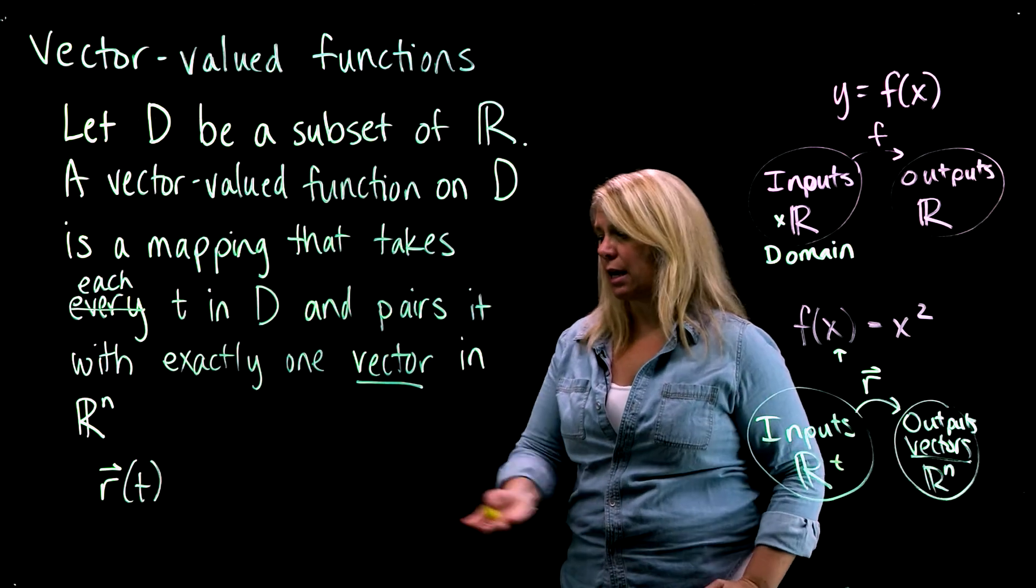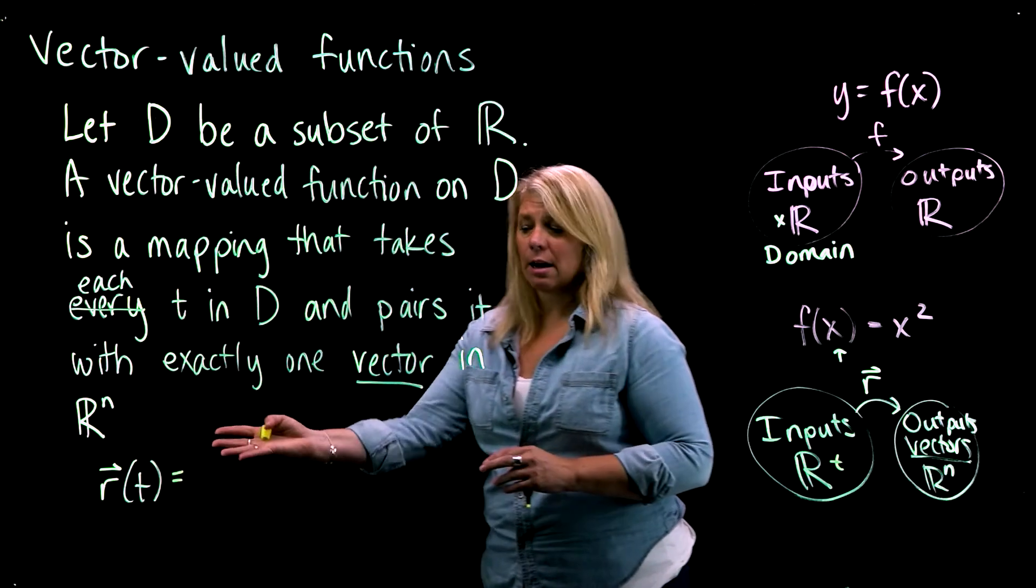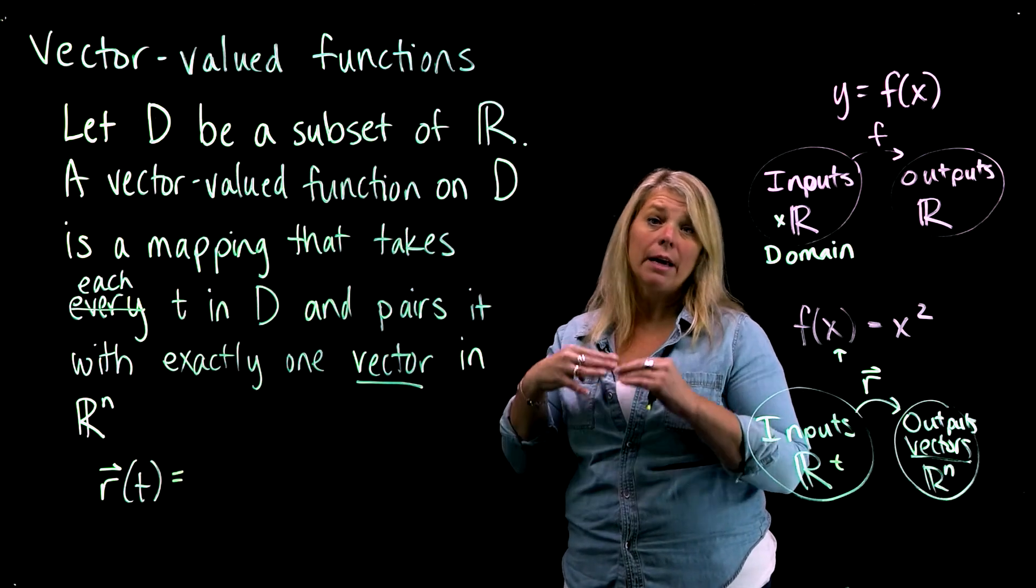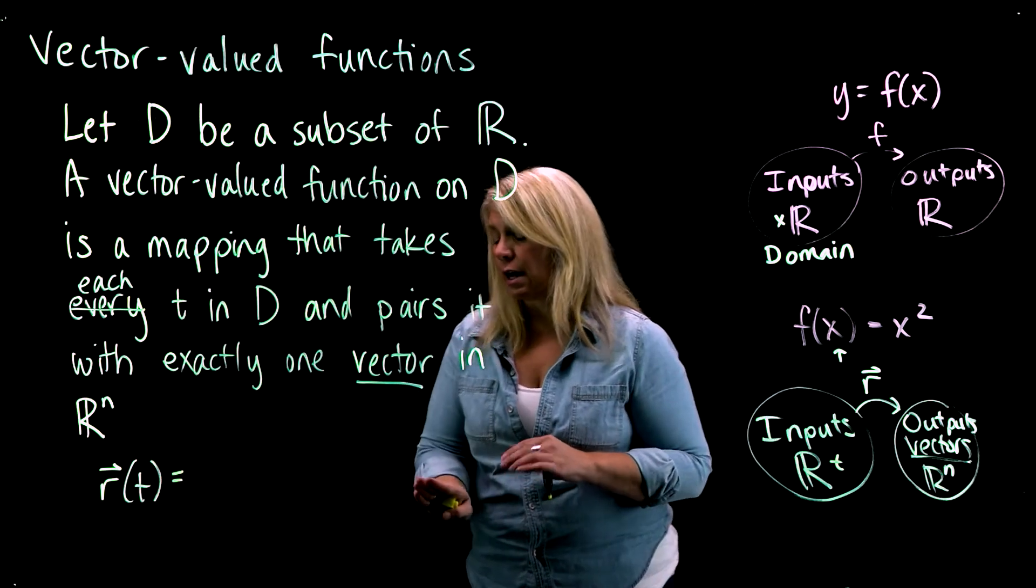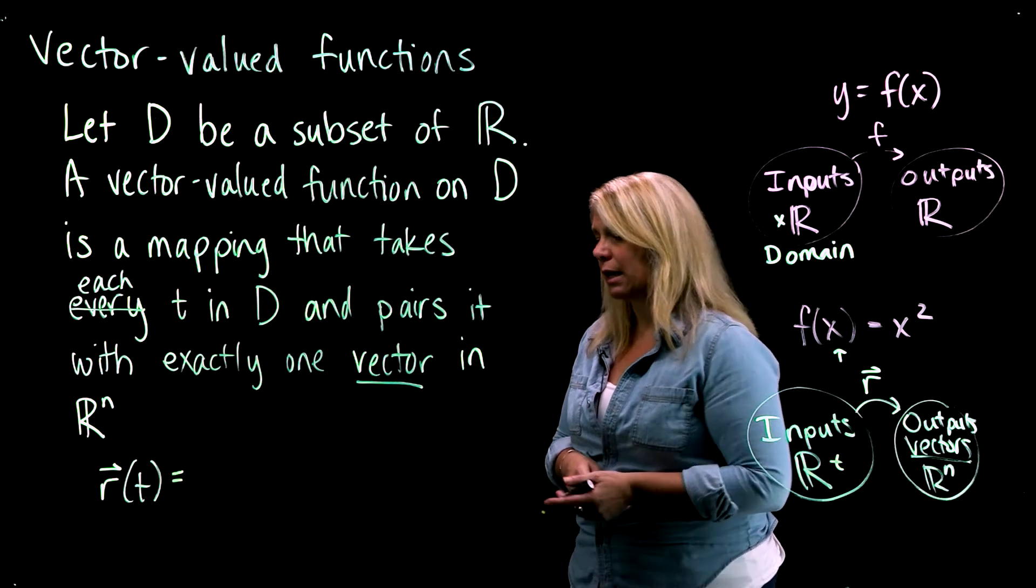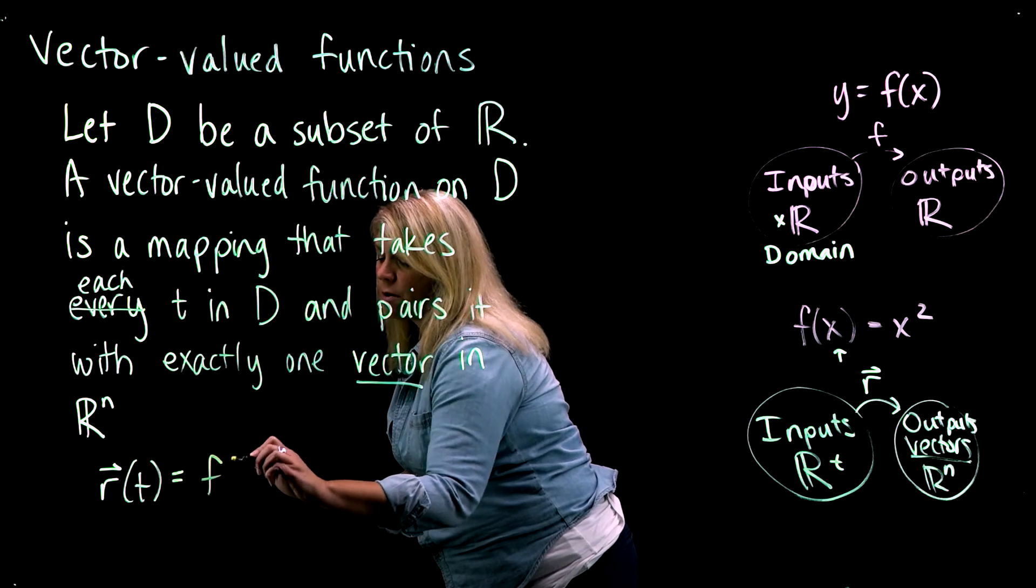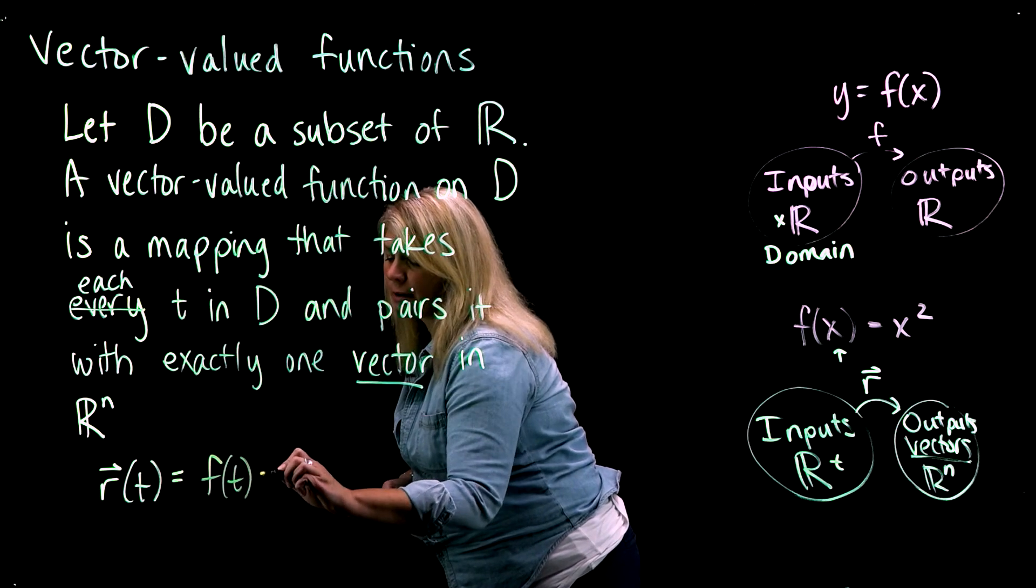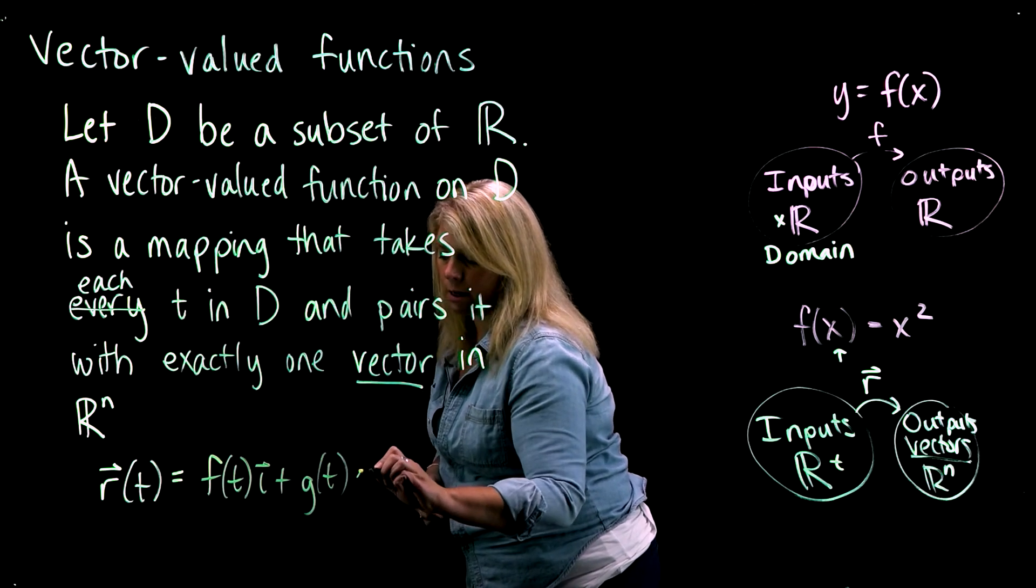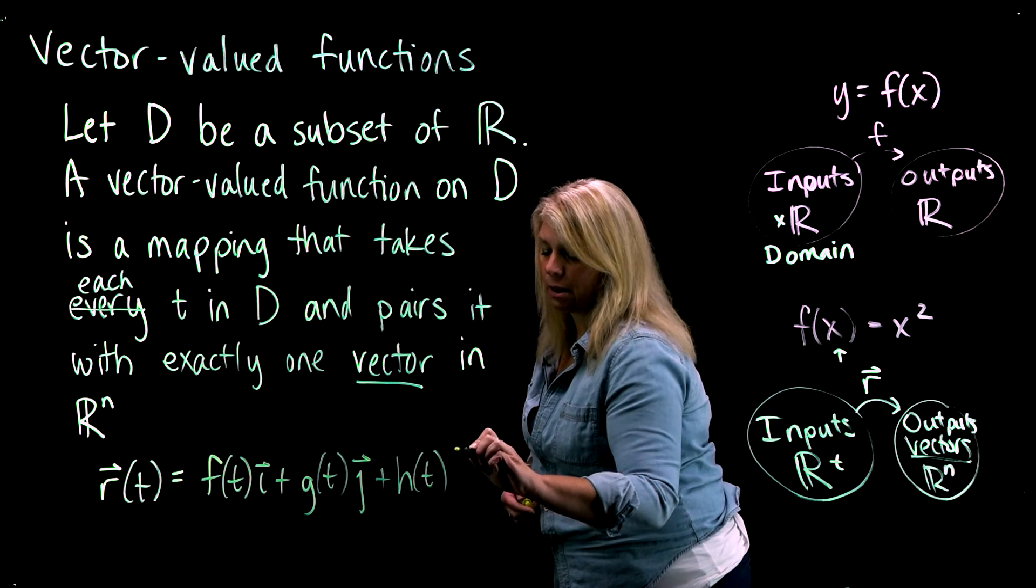That indicates our t variable is our input, and our output is going to be a vector. So we need some notation that looks like a vector. I'll just write one here in R3, but depending on whether you're in R2 or R3 or Rn, you might write that vector a little bit differently. When you write a vector, you're going to have components. You're going to have an f of t in the i component, g of t j, and h of t k.